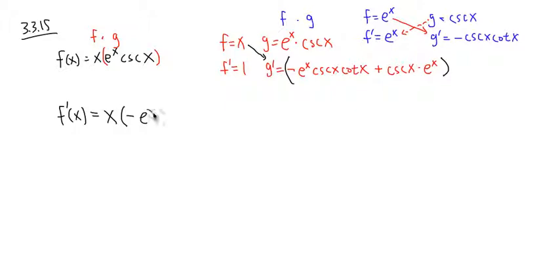Which is negative e to the x, cosecant x, cotangent x, plus, and let's put the e to the x first. So you'll be e to the x, cosecant x, like that, close parentheses.